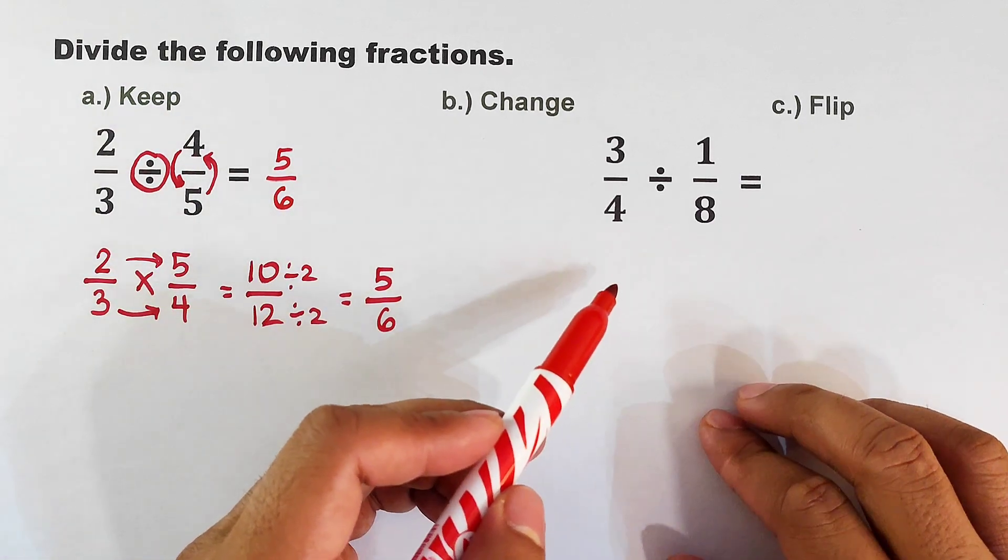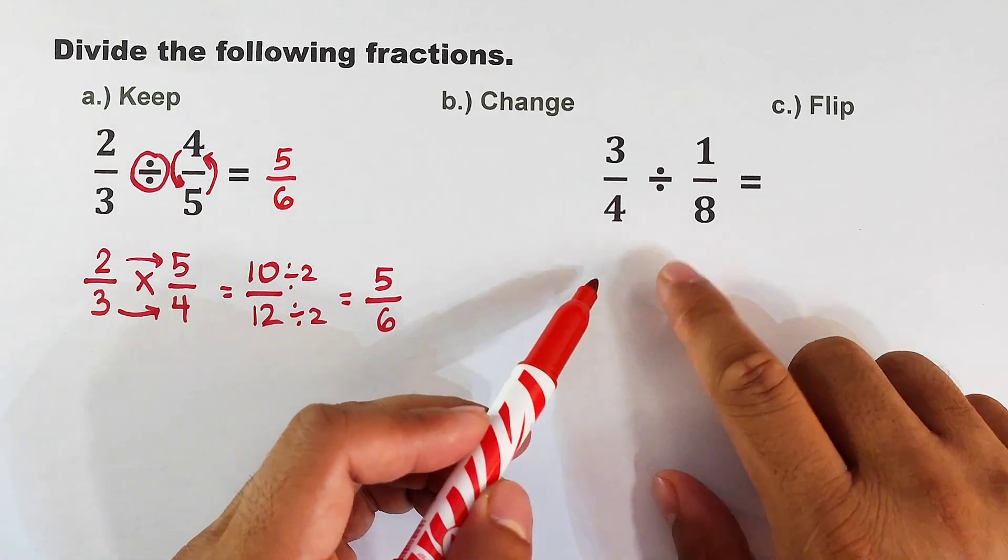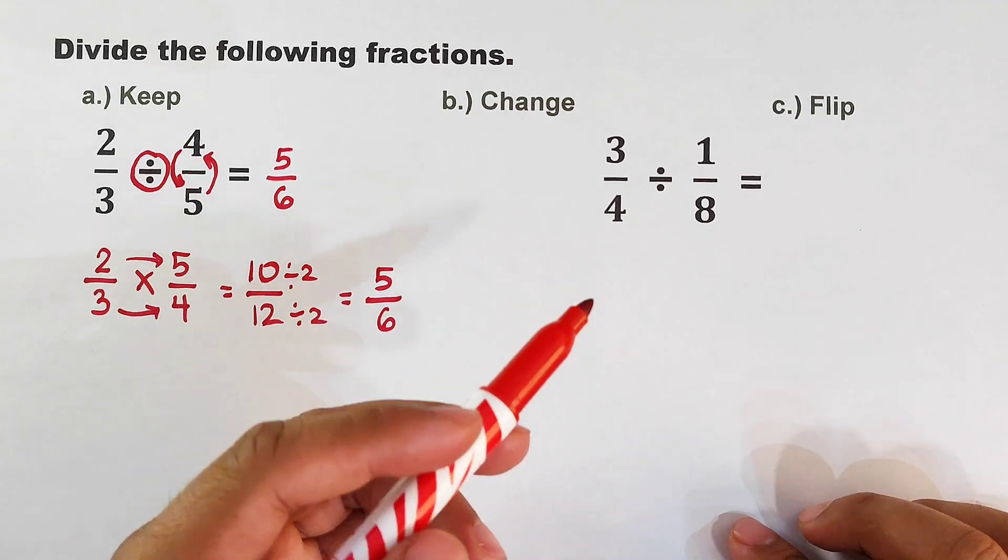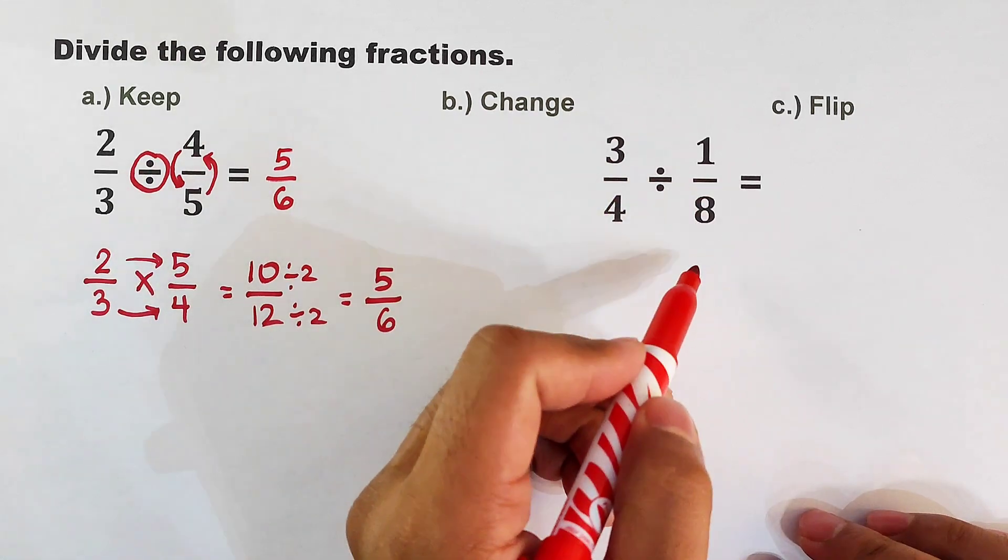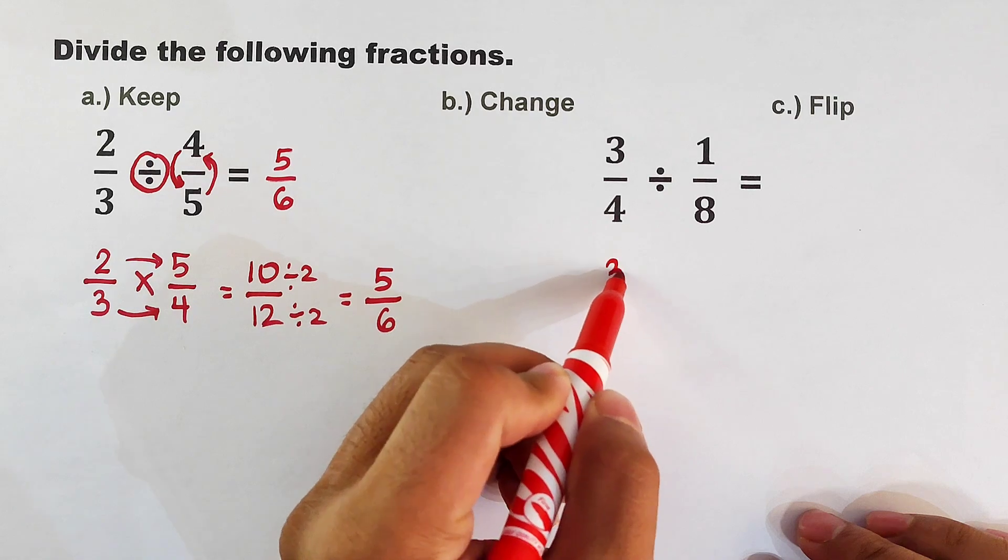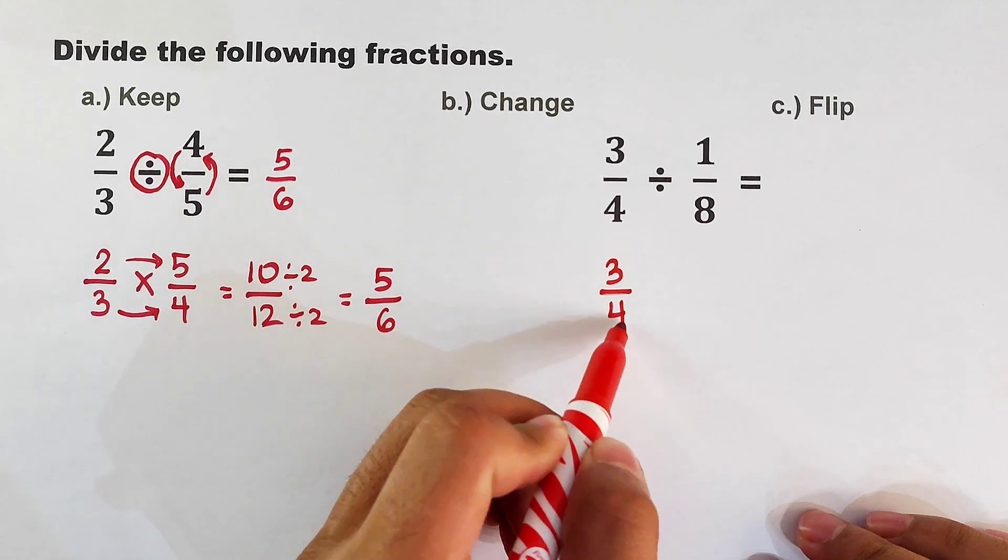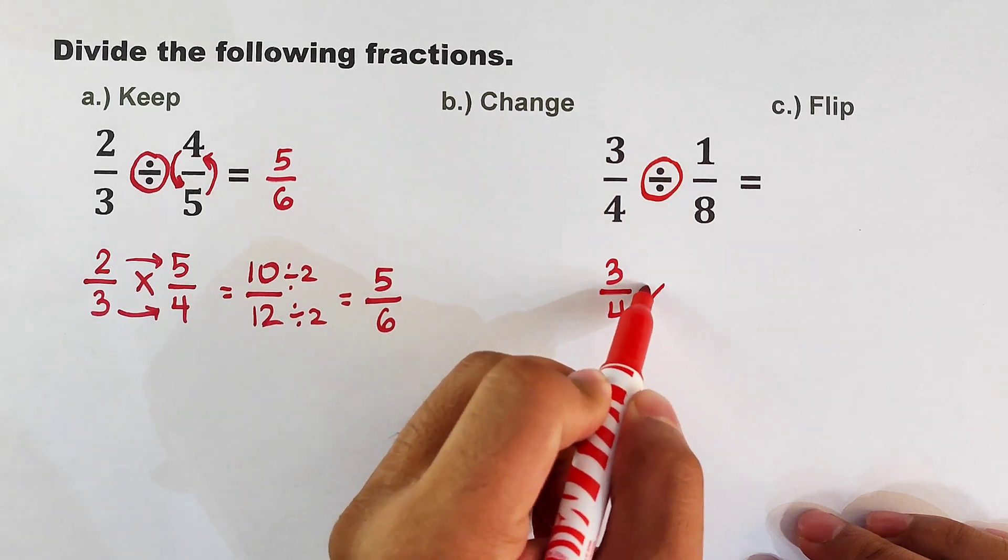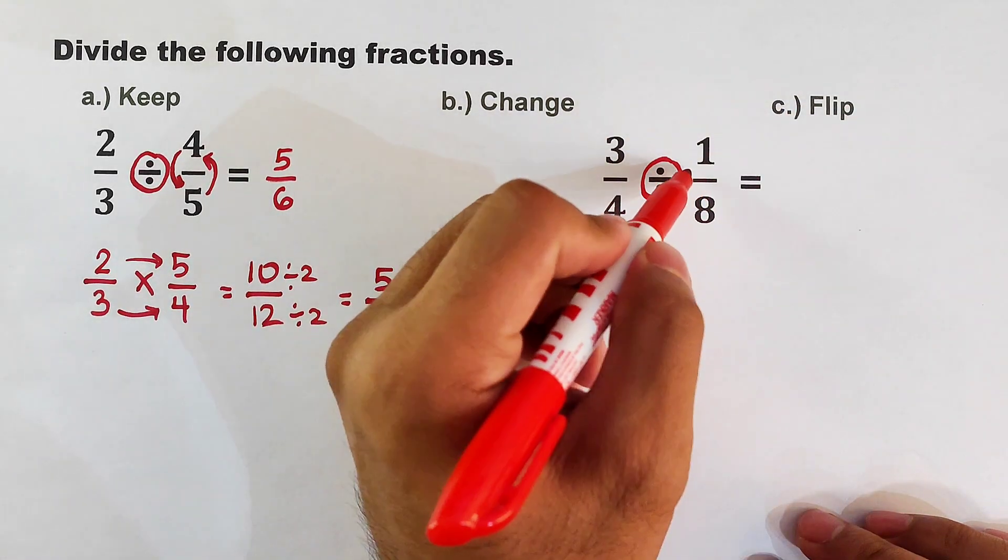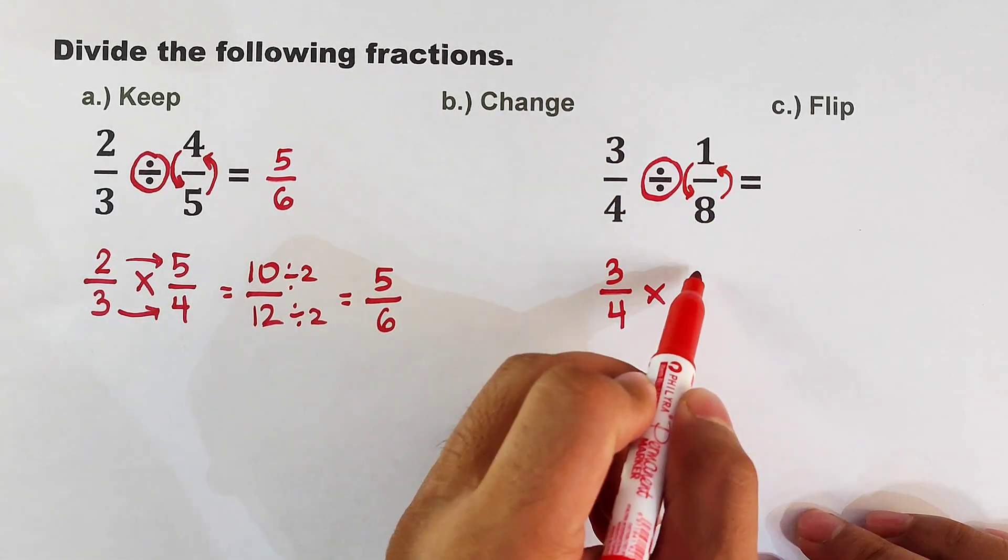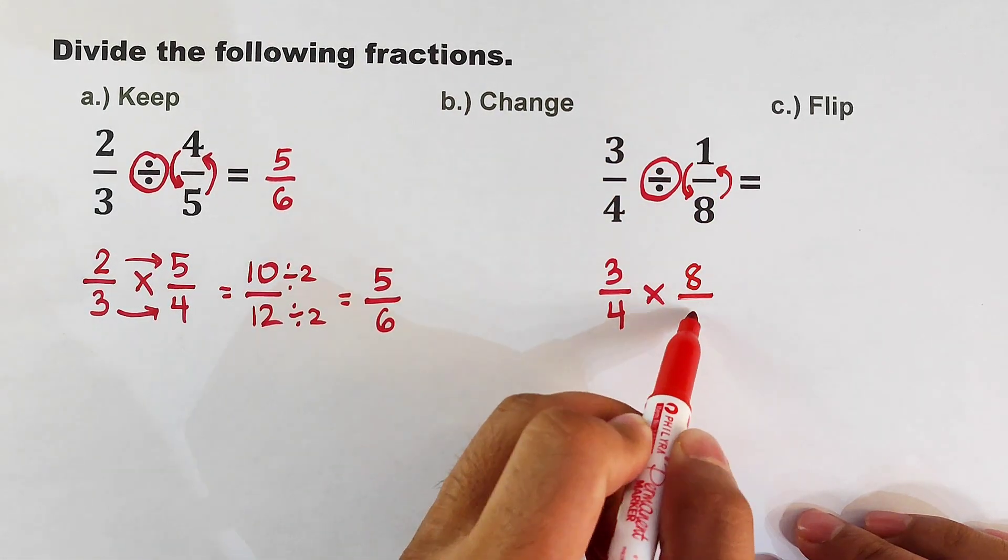Now you can pause the video for a while and you can try 3 over 4 divided by 1 over 8. Okay, let's continue. We have here 3 over 4 divided by 1 over 8. Let's follow the Keep: we will copy this one, 3 over 4. Next is the word Change: change this operation to multiplication. Flip: get the reciprocal or flip your 1 over 8, it will become 8 over 1.